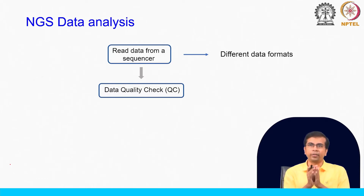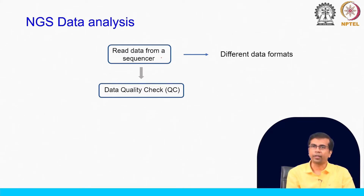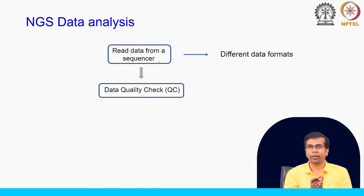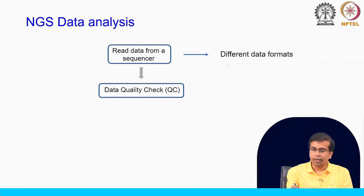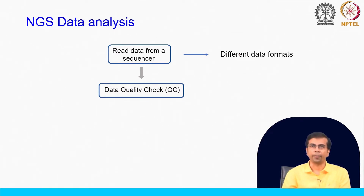To start with a brief overview of the NGS data analysis method, here is a flowchart. The first step is data from a sequencer — whichever sequencer you use, we have this data. These datasets are huge, and the data format would be different. We will talk about data formats in the next class because these sequencers give out data in different formats, and you will have to deal with these different formats.